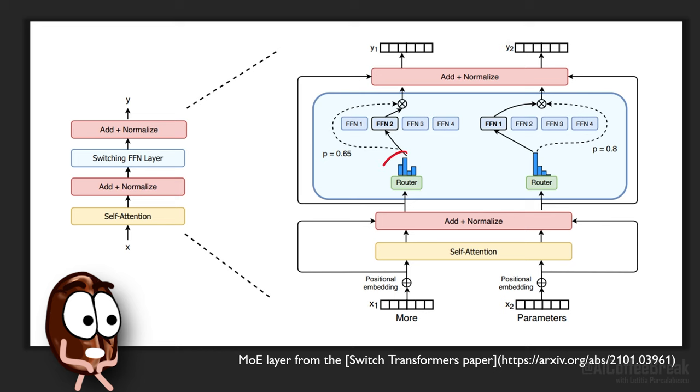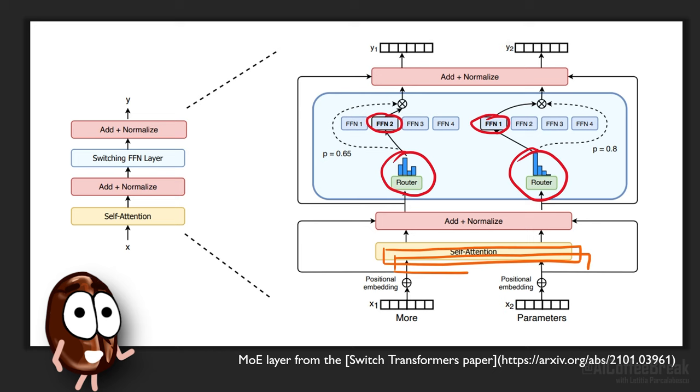MOE does the following at each layer. It uses a neural network layer after the attention layer to tell which MLP layer to use from a series of many MLP layers. Déjà Vu, on the other hand, decides with small neural networks to which neurons from the MLP layer and to which attention heads to route the input to.